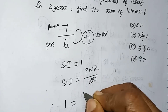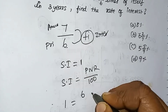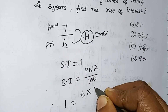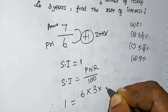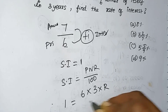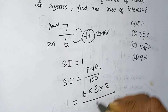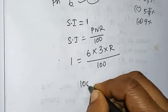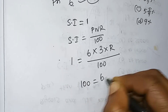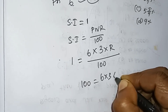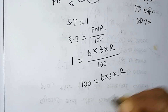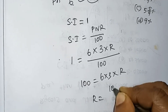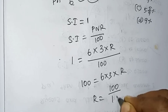Simple interest is 1, principle is 6, number of years is 3, and rate of interest is unknown. So: 1 = (6 × 3 × R) / 100. Therefore R equals 100 divided by 18.